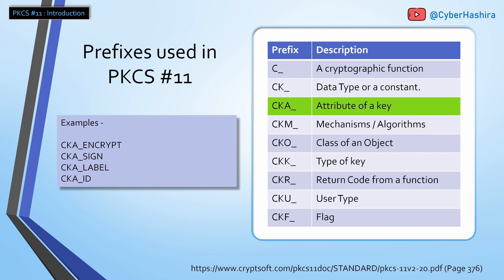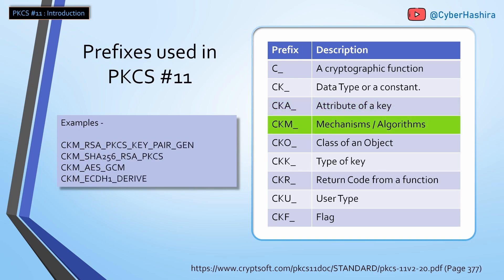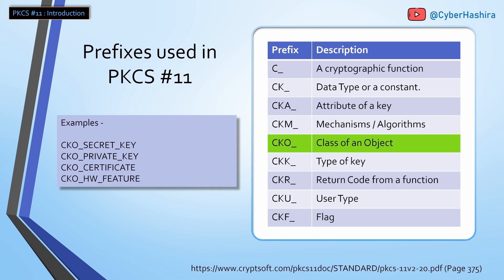CKA_ is a prefix for an attribute — attributes are used to define the property of a key. CKM_ is a prefix used by mechanisms or algorithms. For example, CKM_SHA256_RSA_PKCS is a signing algorithm known as SHA-256 with RSA. CKO_ is a prefix used for an object class. For example, CKO_SECRET_KEY is a class used for secret keys such as AES and DES, and CKO_PRIVATE_KEY is a class used for private keys such as RSA and ECDSA.